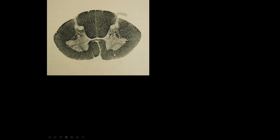Here is a section of the spinal cord at about C8. We can see a pretty big ventral horn with lots of anterior horn cells, because at C8 this supplies a lot of hand muscles, so we need a lot of anterior horn cells in this location.